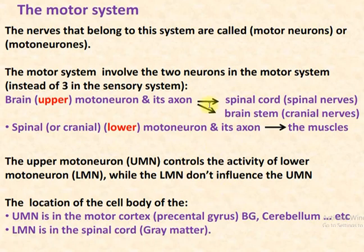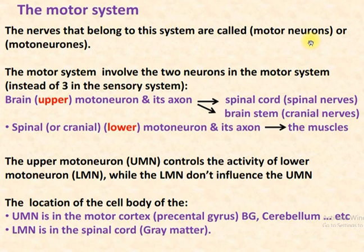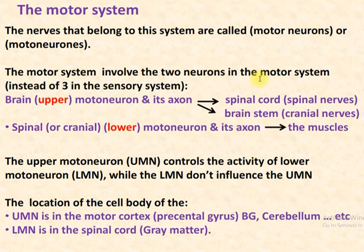The motor system: the nerves that belong to this system are called motor neurons, to differentiate them from other neurons like sensory neurons, neurons for vision, and others. We have two major sets of neurons in the motor system. The first is called the upper motor neuron, and the other is called the lower motor neuron. Last week we talked about the sensory nervous system, which had three levels: first order, second order, and third order neuron.